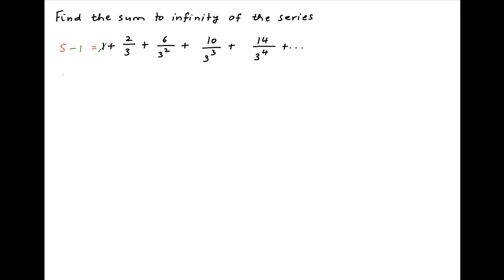Now divide both sides by 3 and rewrite the expression. We get (S minus 1)/3 on the left hand side, and on the right hand side we get 2/3² plus 6/3³ plus and so on. Notice that on the right hand side we have written the series staggering each of the terms by one position.